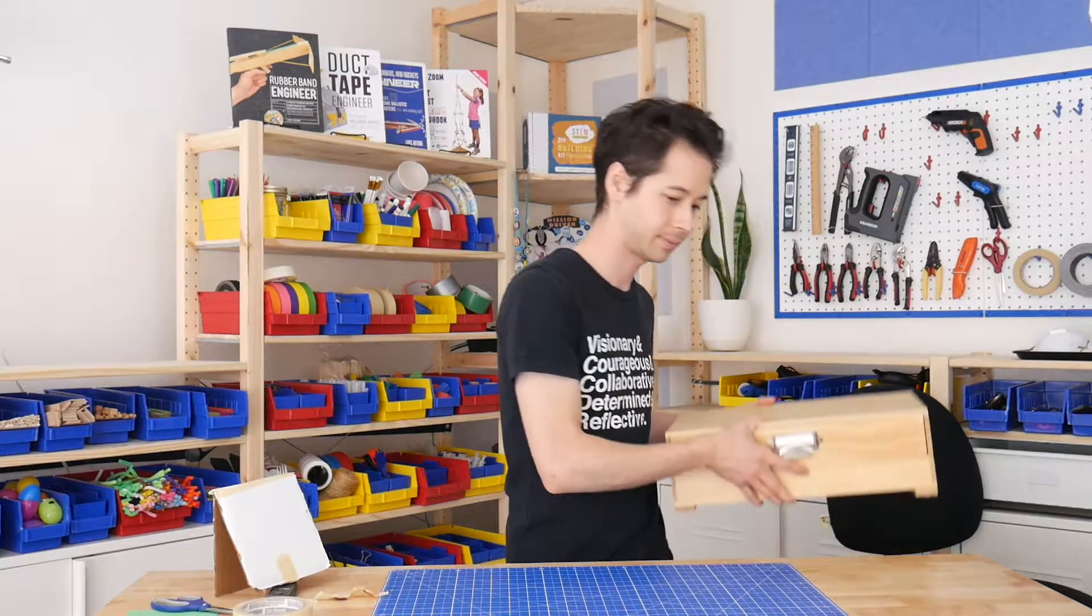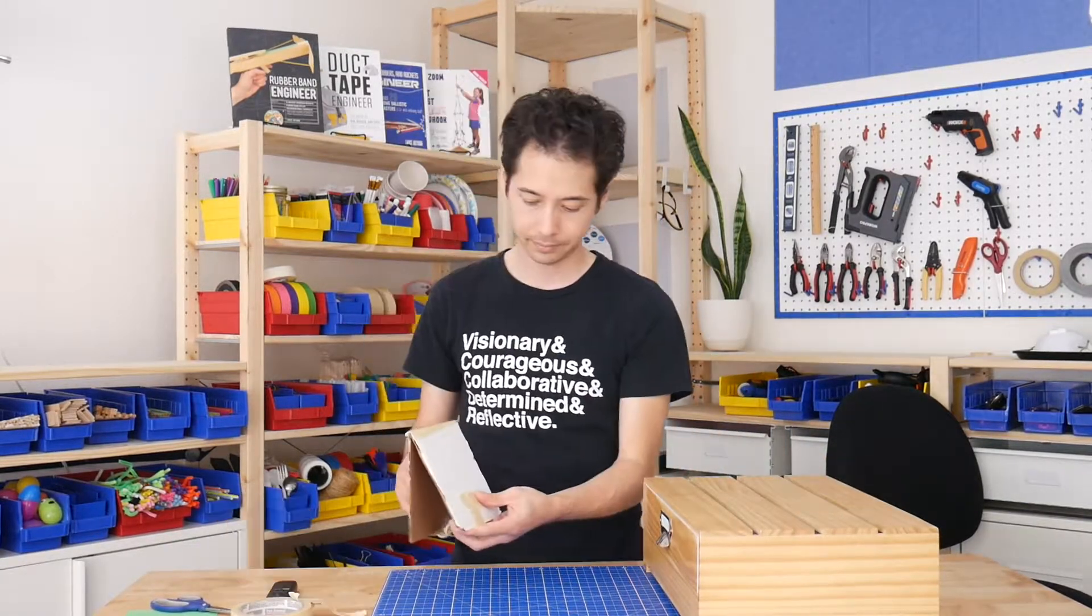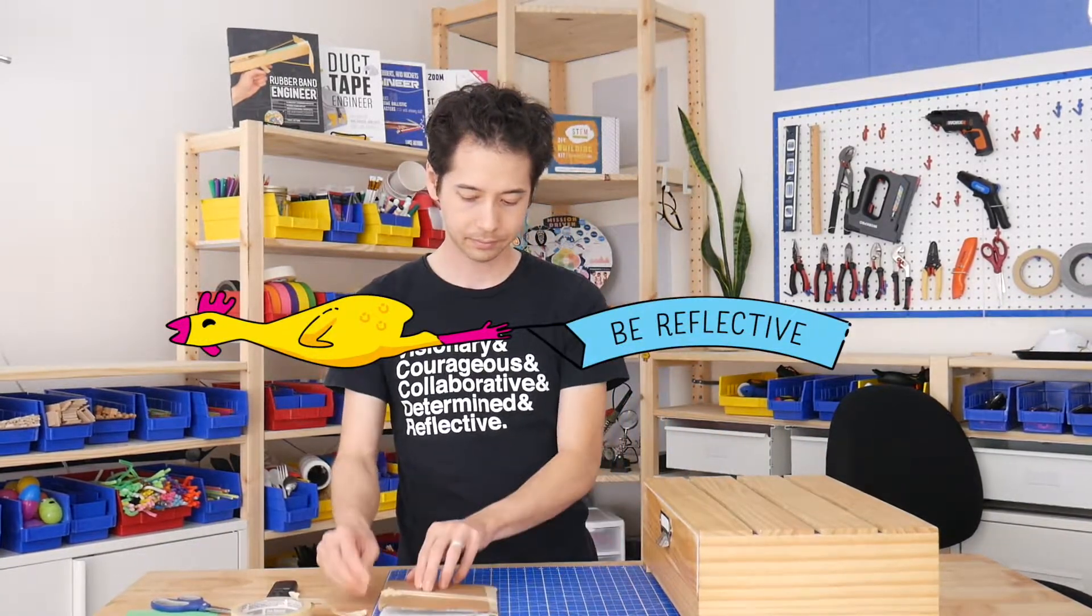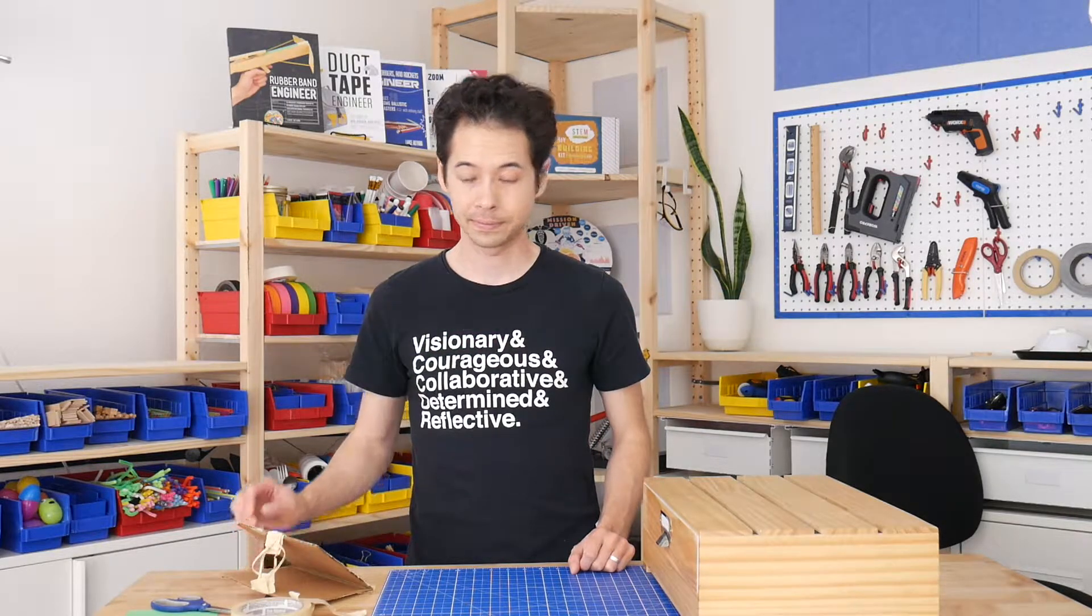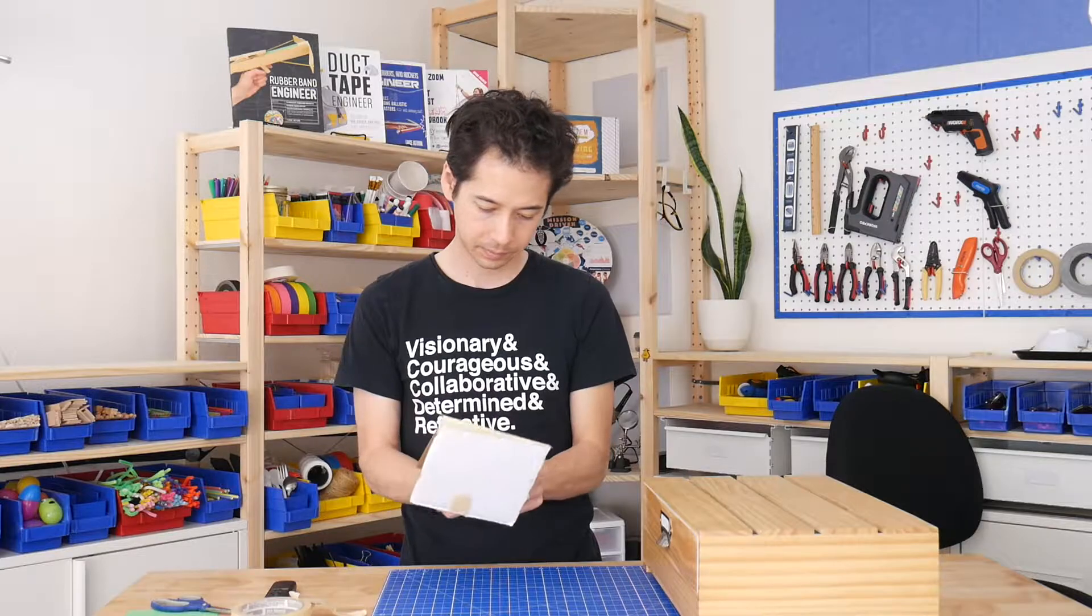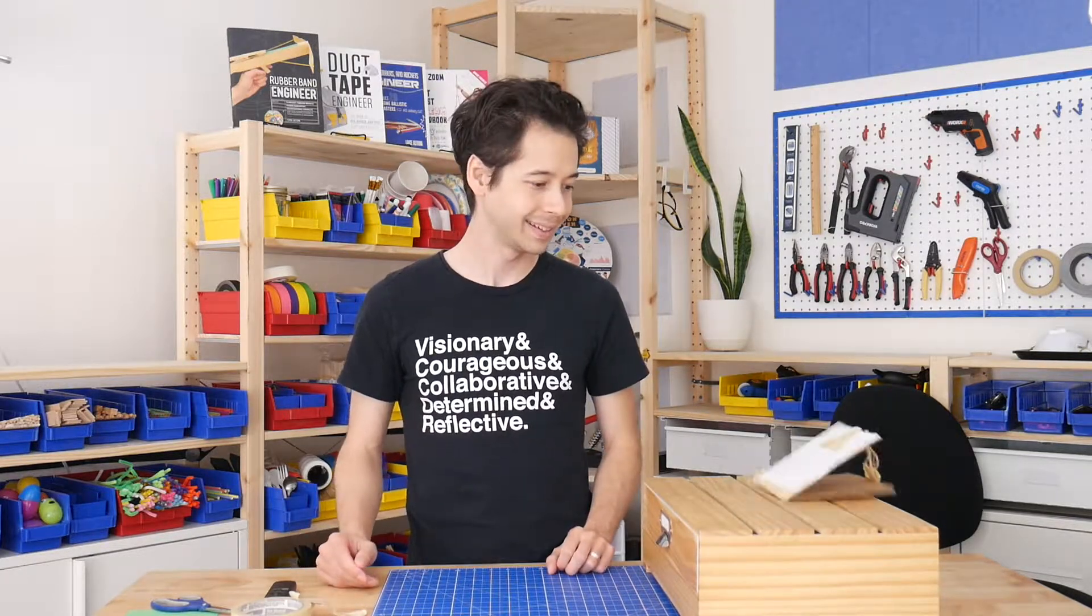After you've achieved that challenge, you can try the next one of getting the frog to jump up onto a box. You'll need to be reflective again because the weights from the first challenge probably won't help with the second one. Let's see, I'm going to try moving the weights to a different spot and test again. Hey, that worked!